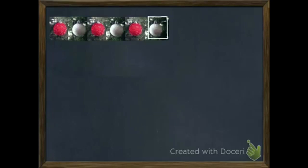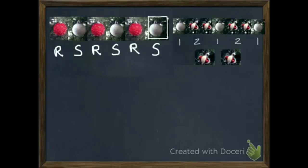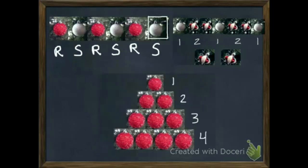So in our three examples today, we started with our first one that had red, silver, red, silver, red, and then we found silver. We have our second example where it went one, two, one, two, one, and then two. And our third example where we were expanding our numbers: one, two, three, four.